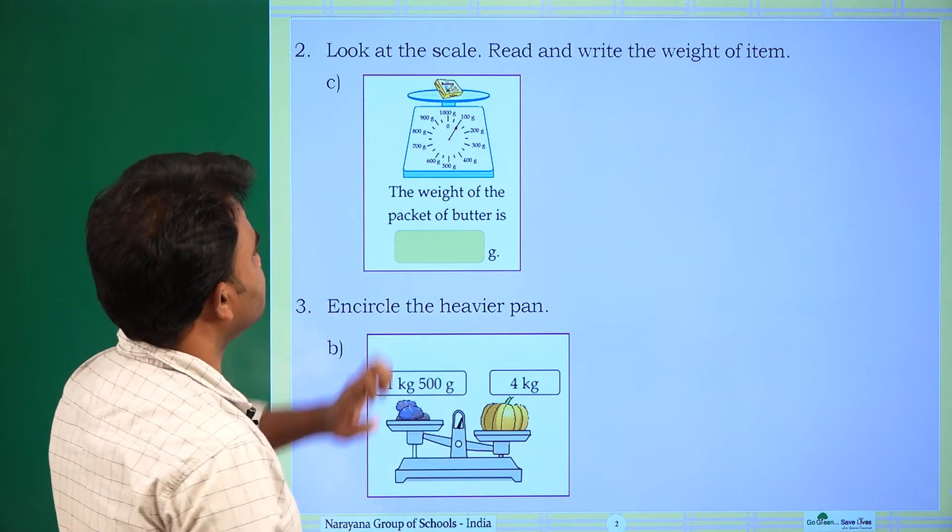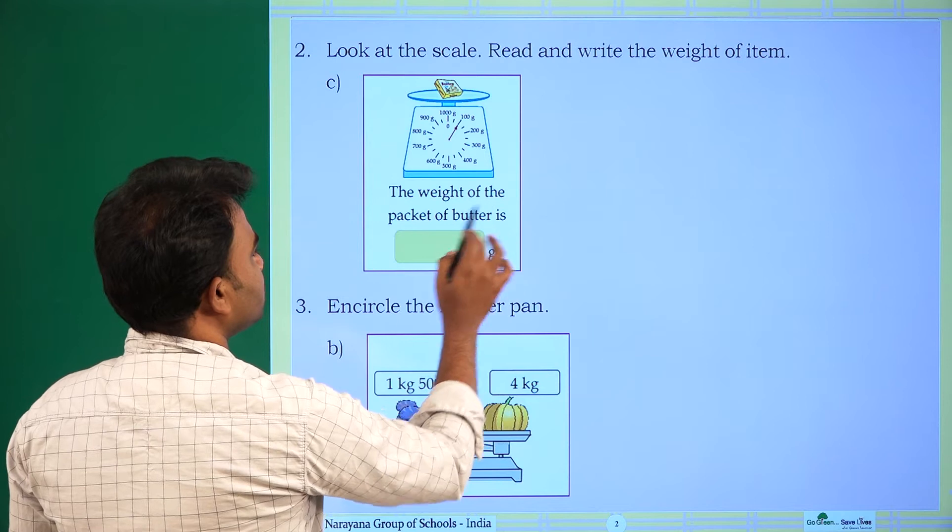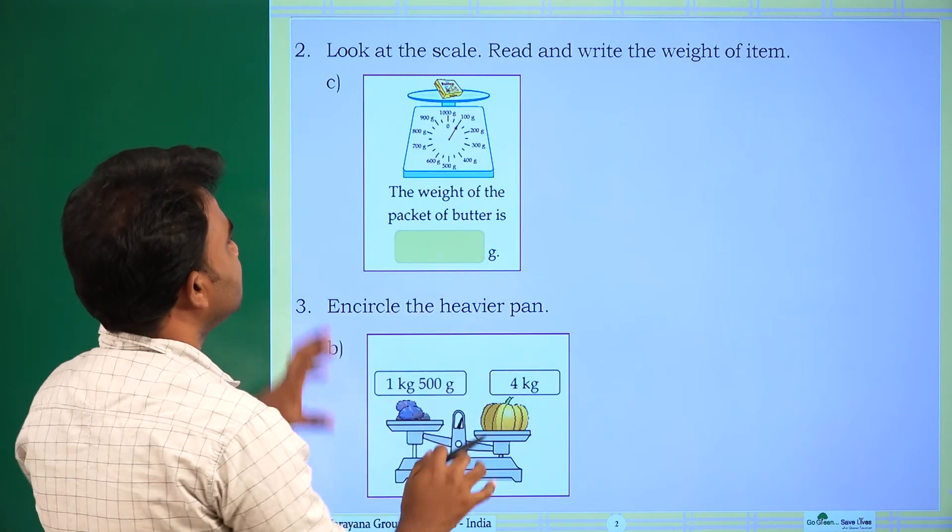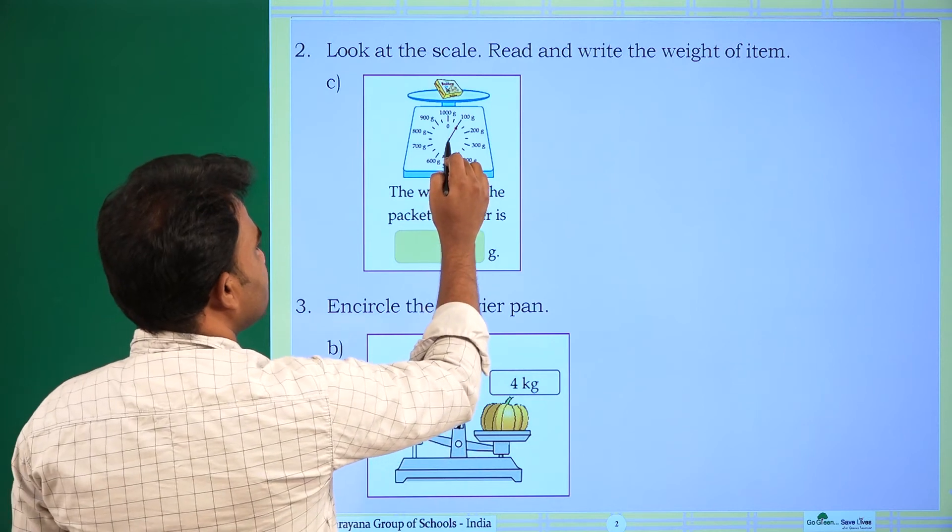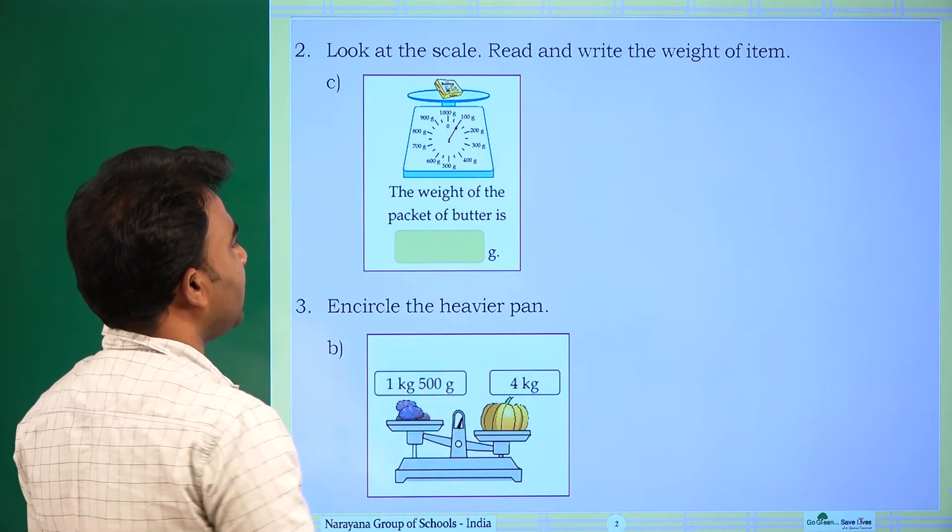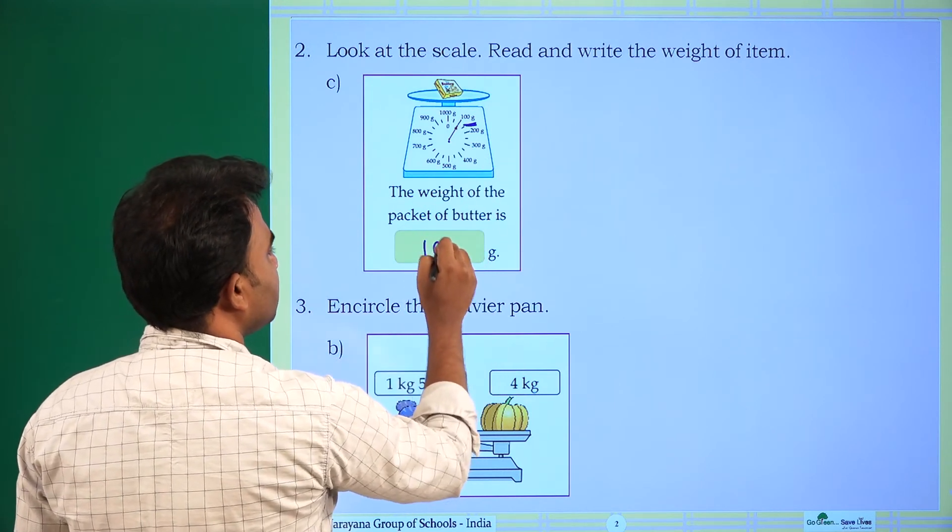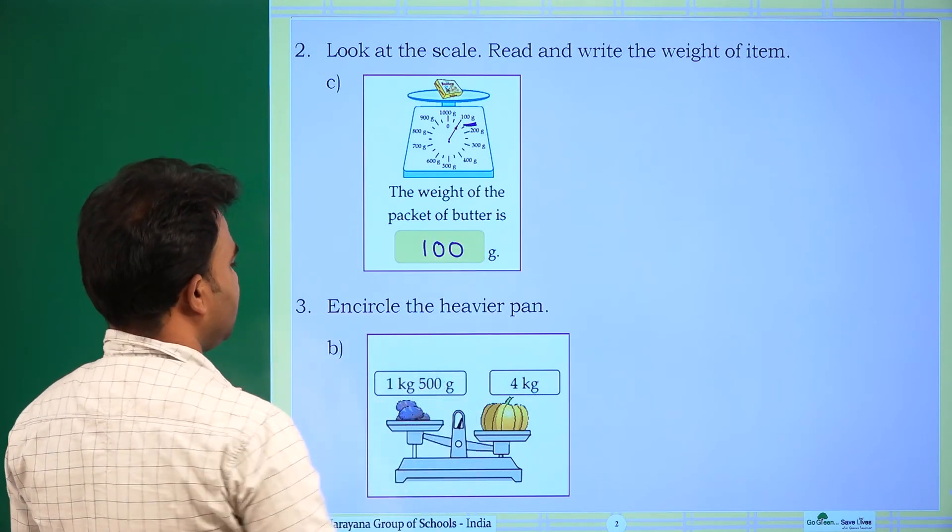The weight of the item is, see the weight of the packet of butter is, this is the packet of butter here. See the arrow mark, it is showing 100, so it is 100 grams. So the weight of the packet is 100 grams.